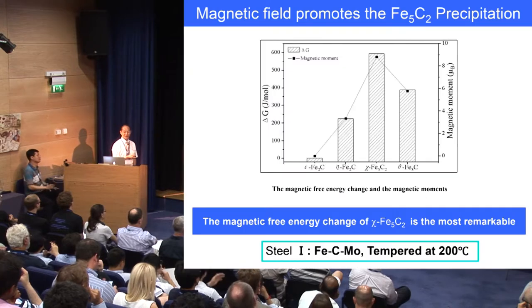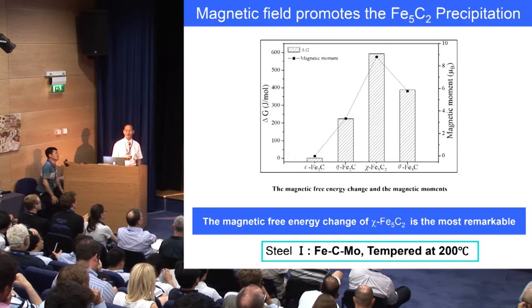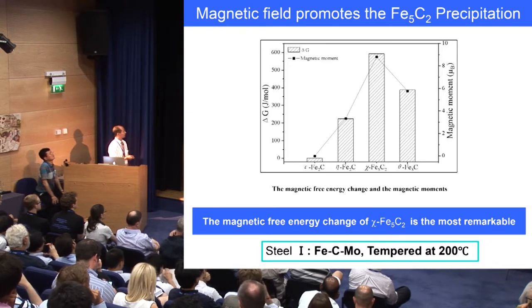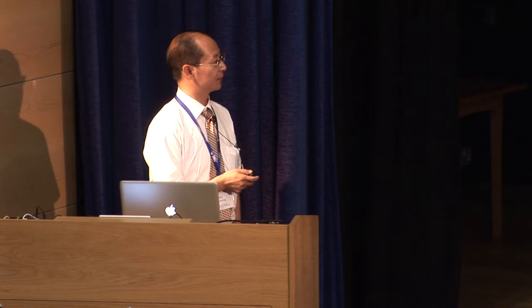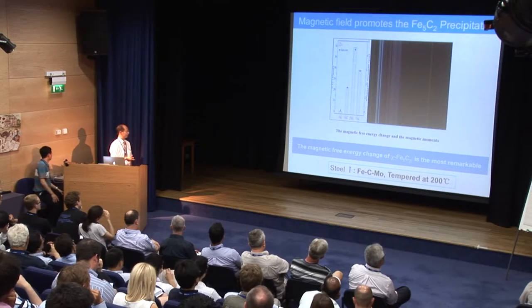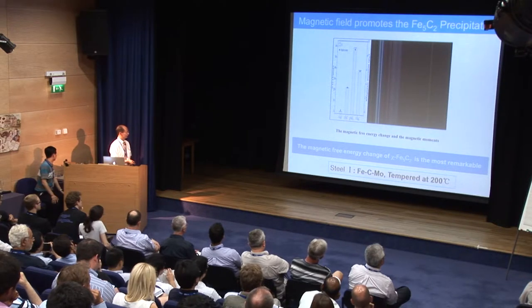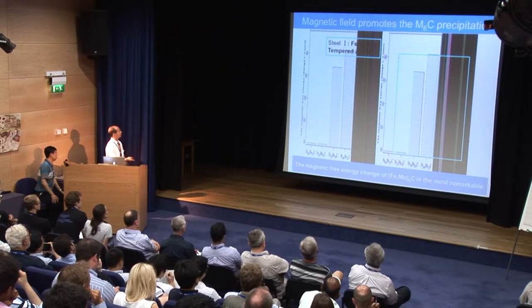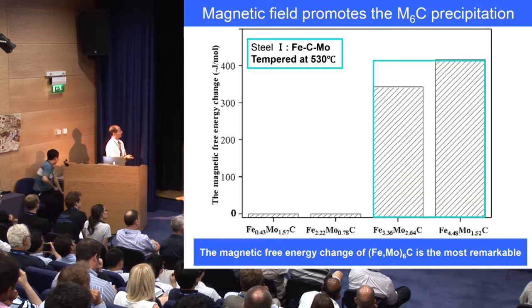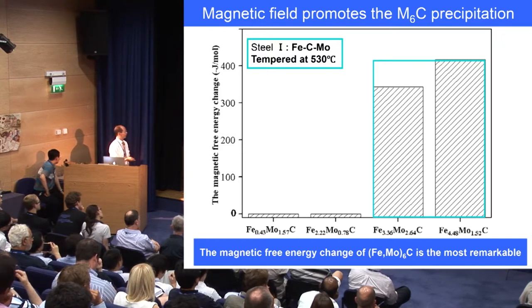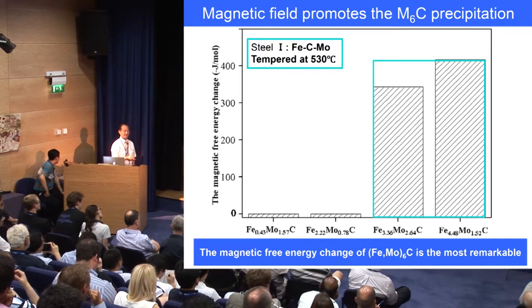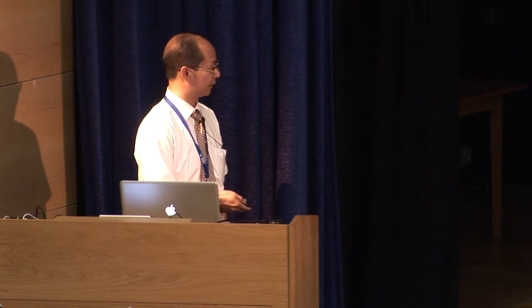For the different cementites, we can also connect magnetic moment and magnetic free energy change. The highest magnetic free energy change is for Fe5C2, so cementite Fe5C2 is promoted at low-temperature tempering. When transferred to a higher temperature or intermediate temperature, the calculated magnetic free energy for M6C is the most remarkable. So at the intermediate temperature, the precipitation of M6C is promoted by the high magnetic field.